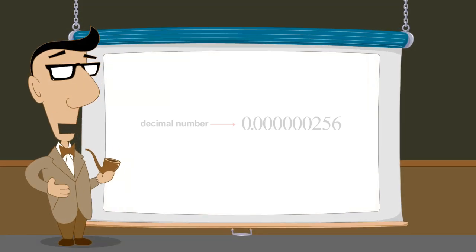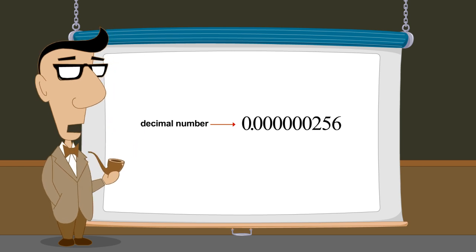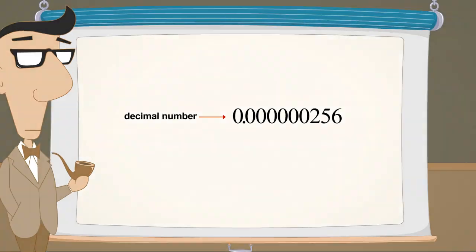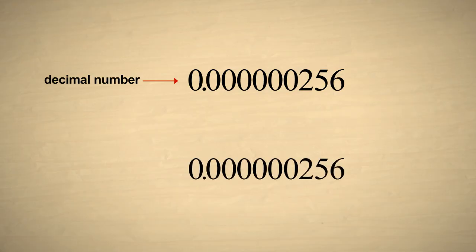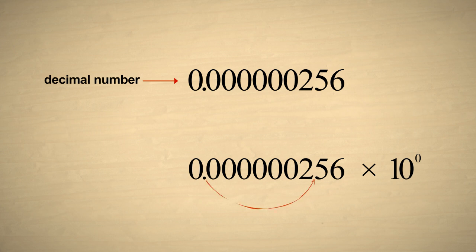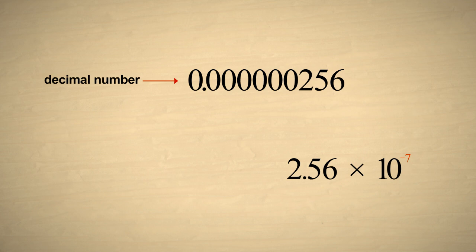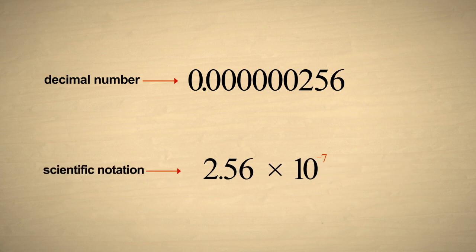For our final example, let's convert a very small decimal number to scientific notation. We add a multiplier of ten to the zero power. To reposition the decimal point after the first non-zero digit, we will need to move it seven columns to the right. Therefore, we must decrease the exponent of the multiplier by seven. The number is now written in scientific notation.